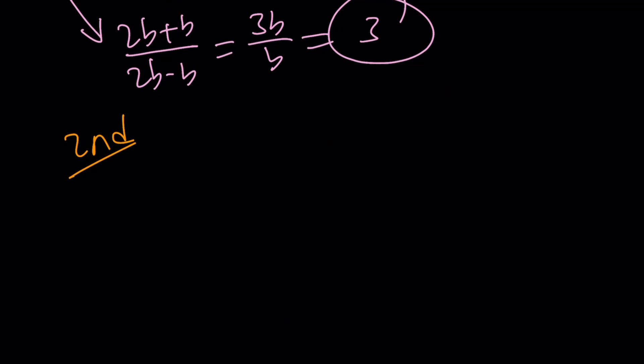Second method. What was the problem? a squared minus 2b squared equals ab. I'm trying to evaluate a plus b over a minus b. But again, this kind of depends on finding a over b or b over a. Let's just focus on a over b.